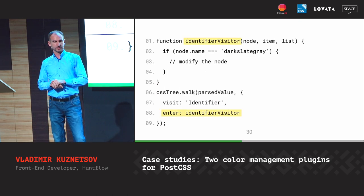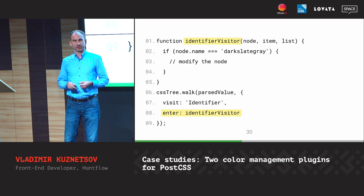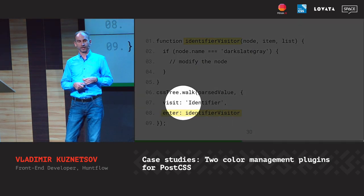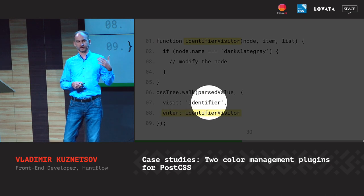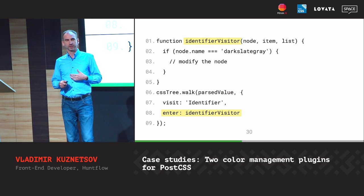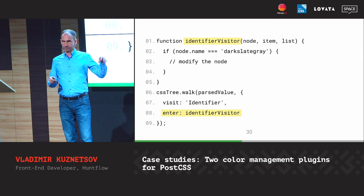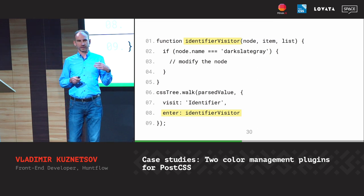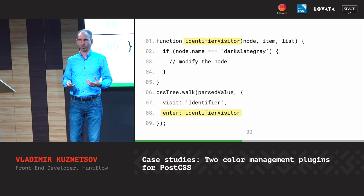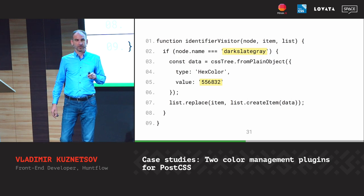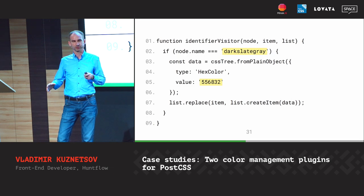CSS3 uses the visitor pattern to traverse the tree. It has one method: 'walk'. You provide the type of node you're interested in — for example, 'identifier' — and CSS3 invokes your callback function every time it finds that node, passing node, item, and list. Node is the current AST node, and item and list are helpful structures to manipulate parents, child nodes, and neighbors. So when we find the keyword we need, we replace the current node with another node.